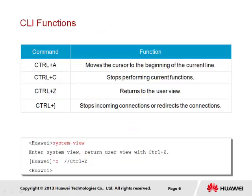In terms of navigation, VRP offers shortcut keys that can be used to simplify navigation of the command line interface. Such shortcut keys enable navigation such as moving forward or backward, deleting a word in a command, or even deleting a whole line. We show some examples here: Ctrl-A moves the cursor to the beginning of the current line; Ctrl-C stops performing current functions, such as when a ping command is being used; and Ctrl-Z returns us to the user view. We can see an example at the bottom where we've transitioned to a system view and used Ctrl-Z to transition back to the user view. Additionally, Ctrl and right bracket is used to exit from a remote connection such as telnet.